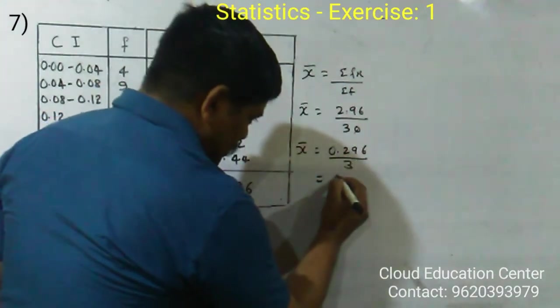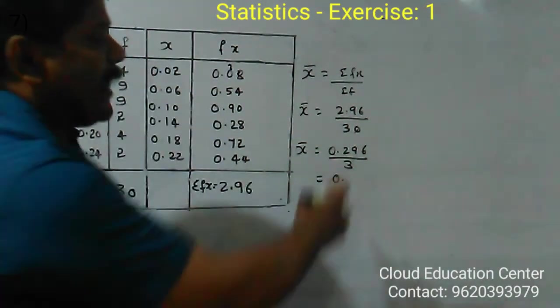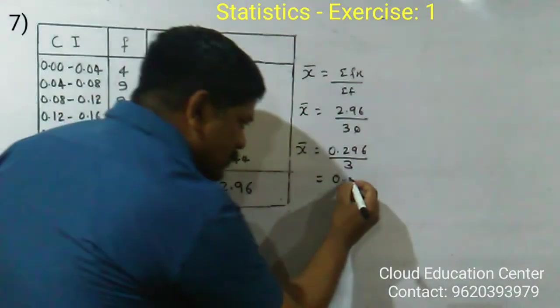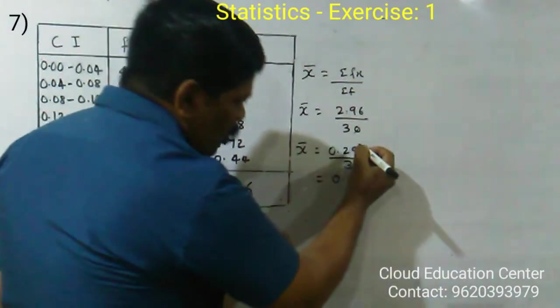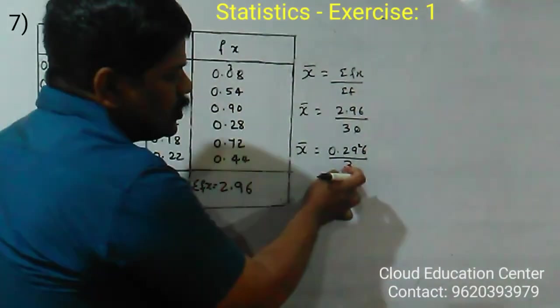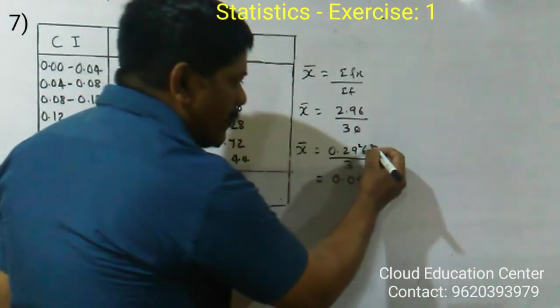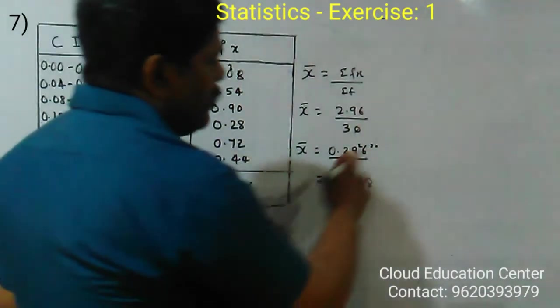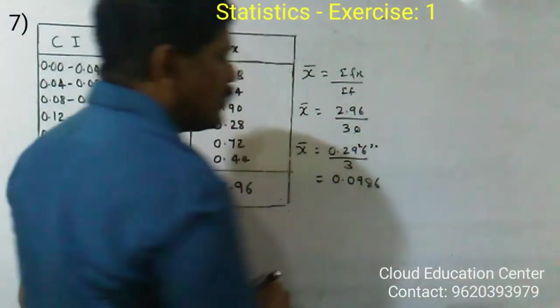3 cannot divide 2, so I take 9 also. Put 0 here. 3 nines are 27, remainder 2. 3 eights are 24, remainder 2. I take 0 next. 3 sixes are 18.